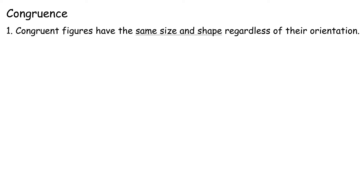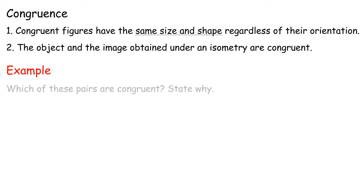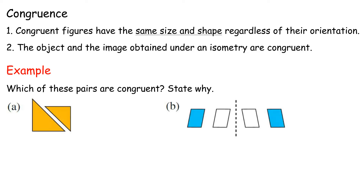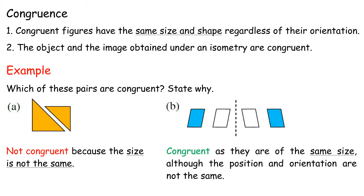Congruent figures have the same size and shape, regardless of their orientation. The object and the image obtained under an isometry are congruent. Example: Which of these pairs are congruent? Solution: A. Not congruent, because the size is not the same. B. Congruent, as they are of the same size, although the position and orientation are not the same.